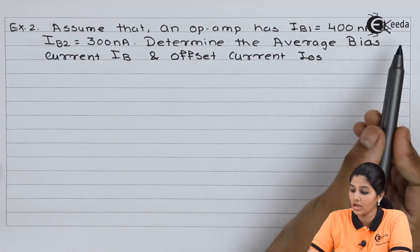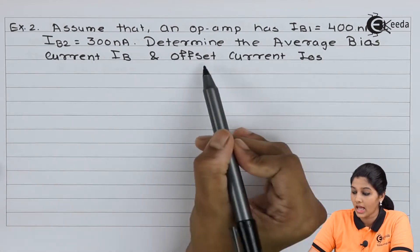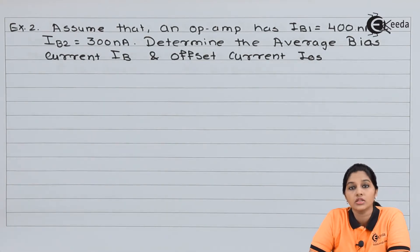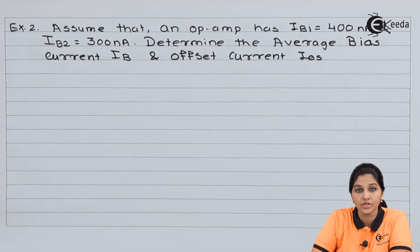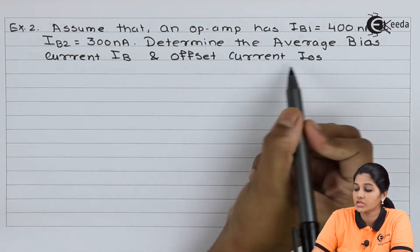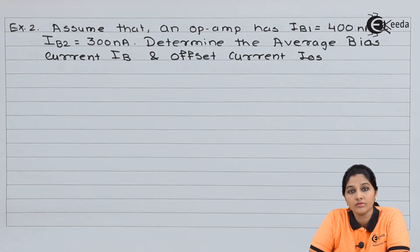Assume that an op-amp has IB1 equals to 400 nA and IB2 equals to 300 nA. Determine the average bias current IB and offset current IOS. These two currents are nothing but the current flowing through the inverting and non-inverting terminal of the op-amp. We need to calculate average bias current IB, which is the average of the two currents, and offset current IOS, which is the difference between the two currents.